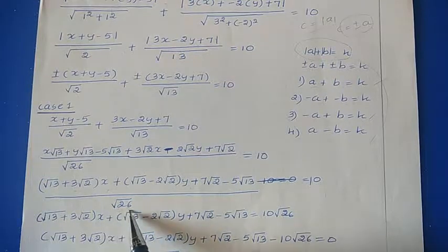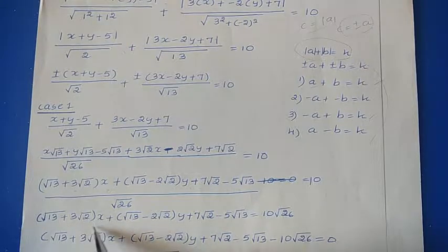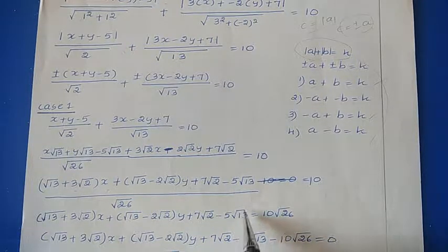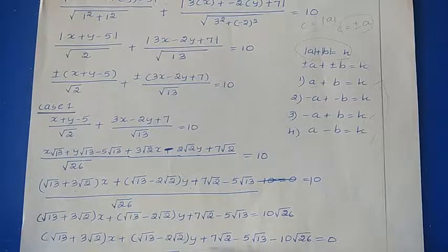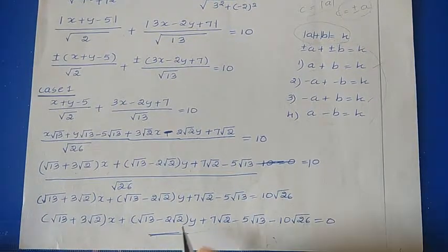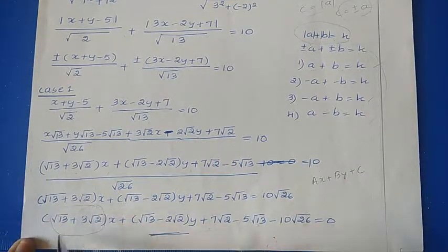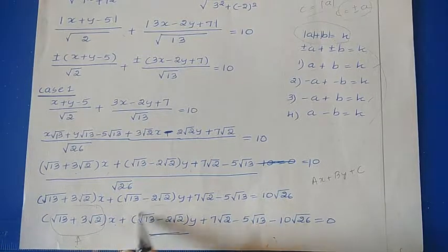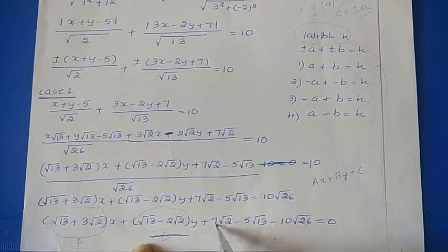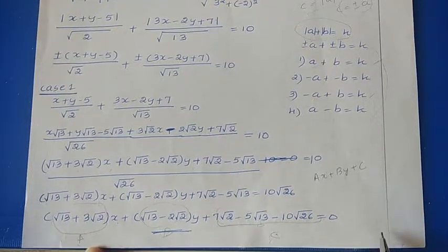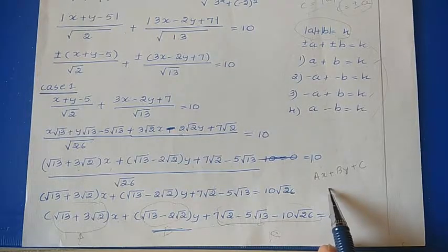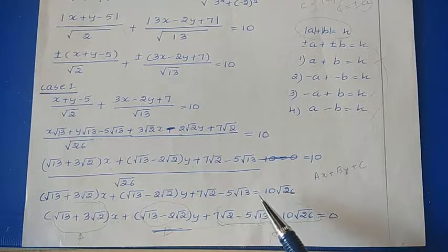Taking √26 to the right-hand side: (√13+3√2)x + (√13-2√2)y + (7√2-5√13) = 10√26. This particular value is in the form AX+BY+C=0, where we can take (√13+3√2) as A, (√13-2√2) as B, and the remaining constant terms as C. So we can say that P must move on a line.